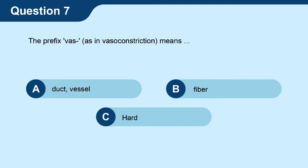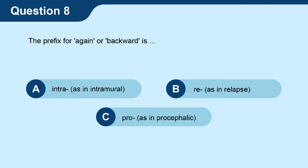Question 7. The prefix vas as in vasoconstriction means... Question 8. The prefix for again or backward is...